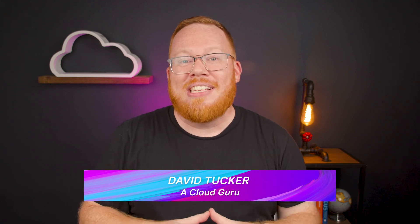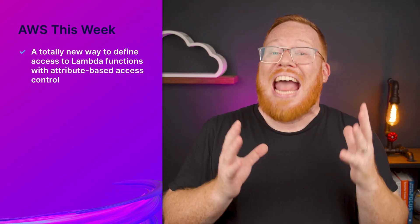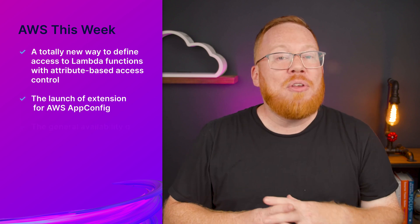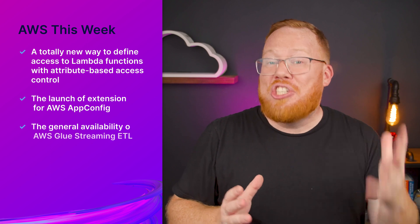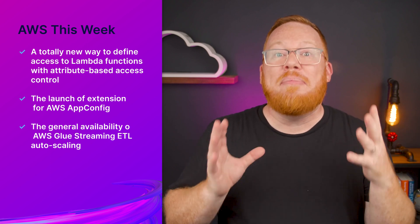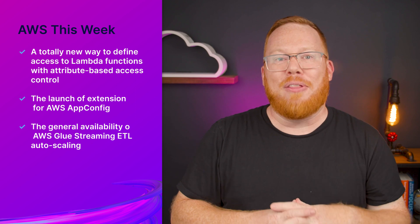Hello, I'm David Tucker, and this is AWS This Week. The cloud keeps marching on, and I have four — yes, four — AWS announcements that you need to know about. We have a totally new way to define access to Lambda functions with attribute-based access control, the launch of extensions for AWS AppConfig, and the general availability of AWS Glue streaming ETL autoscaling. I've also got one extra announcement for all you TypeScript developers, but you'll have to be patient for that one. To the news!